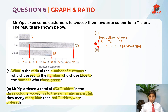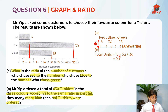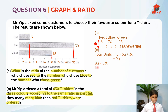For part B, they told us that he ordered 630 t-shirts total. The total is 1 unit plus 5 units plus 3 units, which is 9 units. So 9 units equals 630. I've always told you — when you have units, you should always find 1 unit. So 1 unit equals 630 divided by 9, which equals 70.